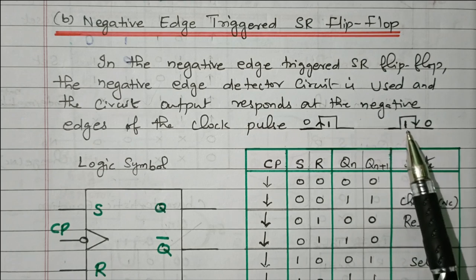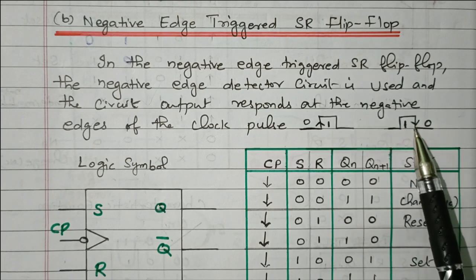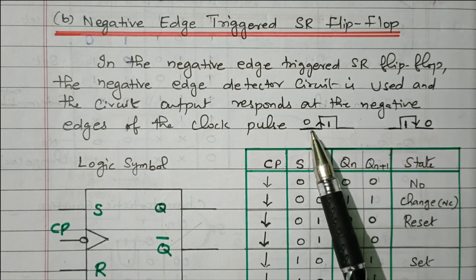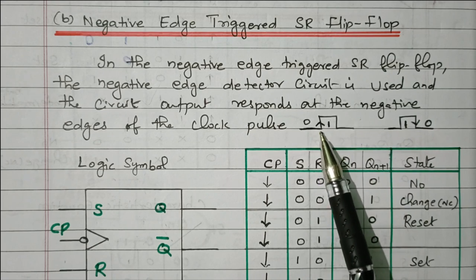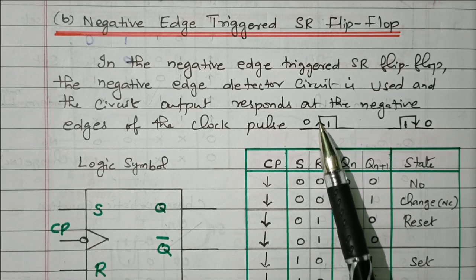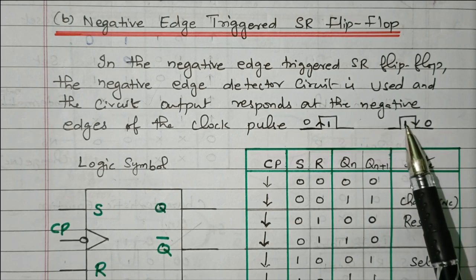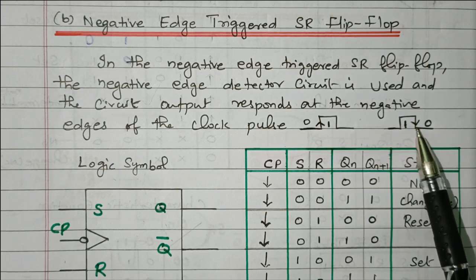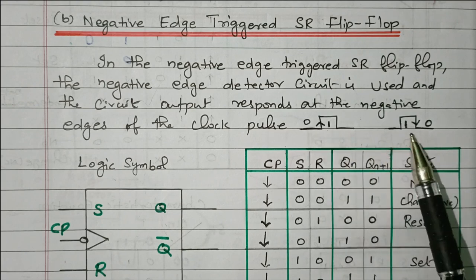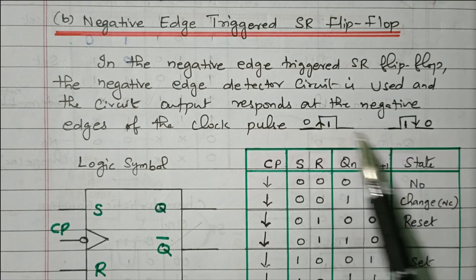Now see this clock pulse changing from 1 to 0 — it goes down. Changing from 1 to 0, going downward, this is a negative edge triggered flip-flop. So whenever it changes from 0 to 1 during the rising edge, that is called a positive edge. When it goes from 1 to 0, that is the negative edge, and the circuit will respond at that point.